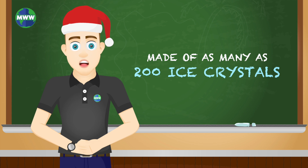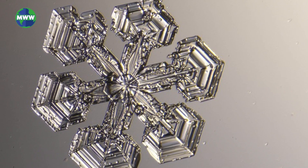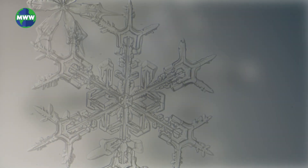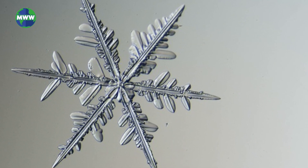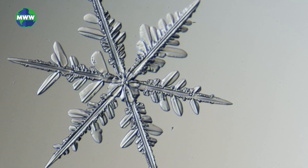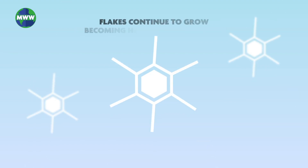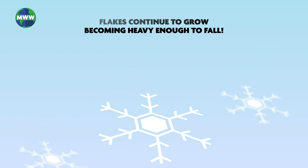Snowflakes are made of as many as 200 ice crystals. They have a hexagonal structure and can be symmetrical, although some are not. Snowflakes are very similar in their shape and formation. Snow forms in clouds when ice crystals form around dust and debris particles, and continue to grow around those particles, becoming heavy enough to fall toward Earth.